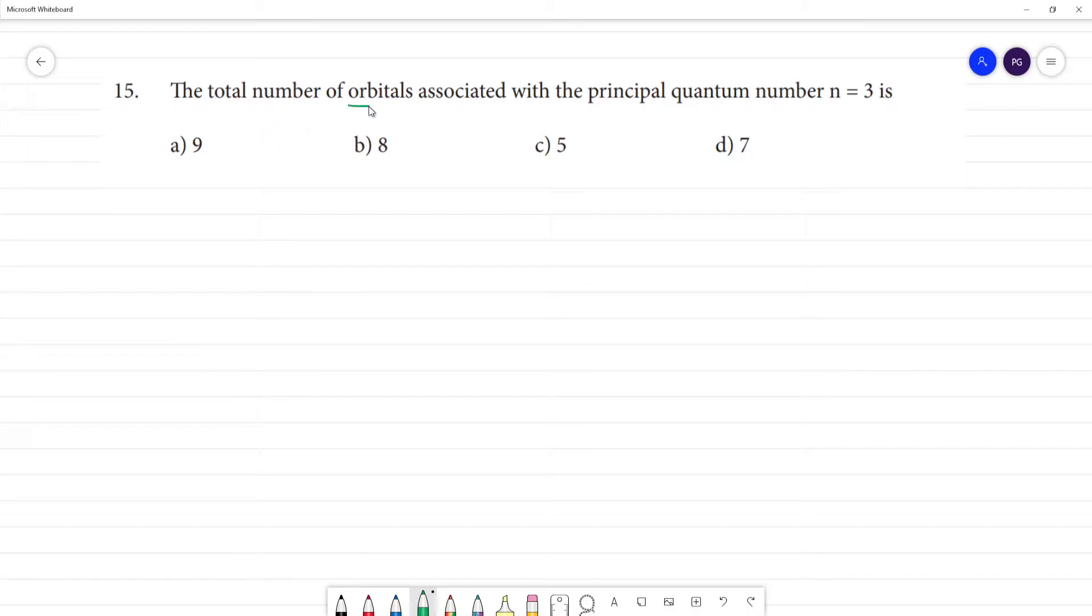The total number of orbitals associated with the principal quantum number n = 3. You can use a direct formula here. The total number of orbitals (s orbital, p orbital, d orbital) is going to be n². So that is equal to 3², which will be 9.